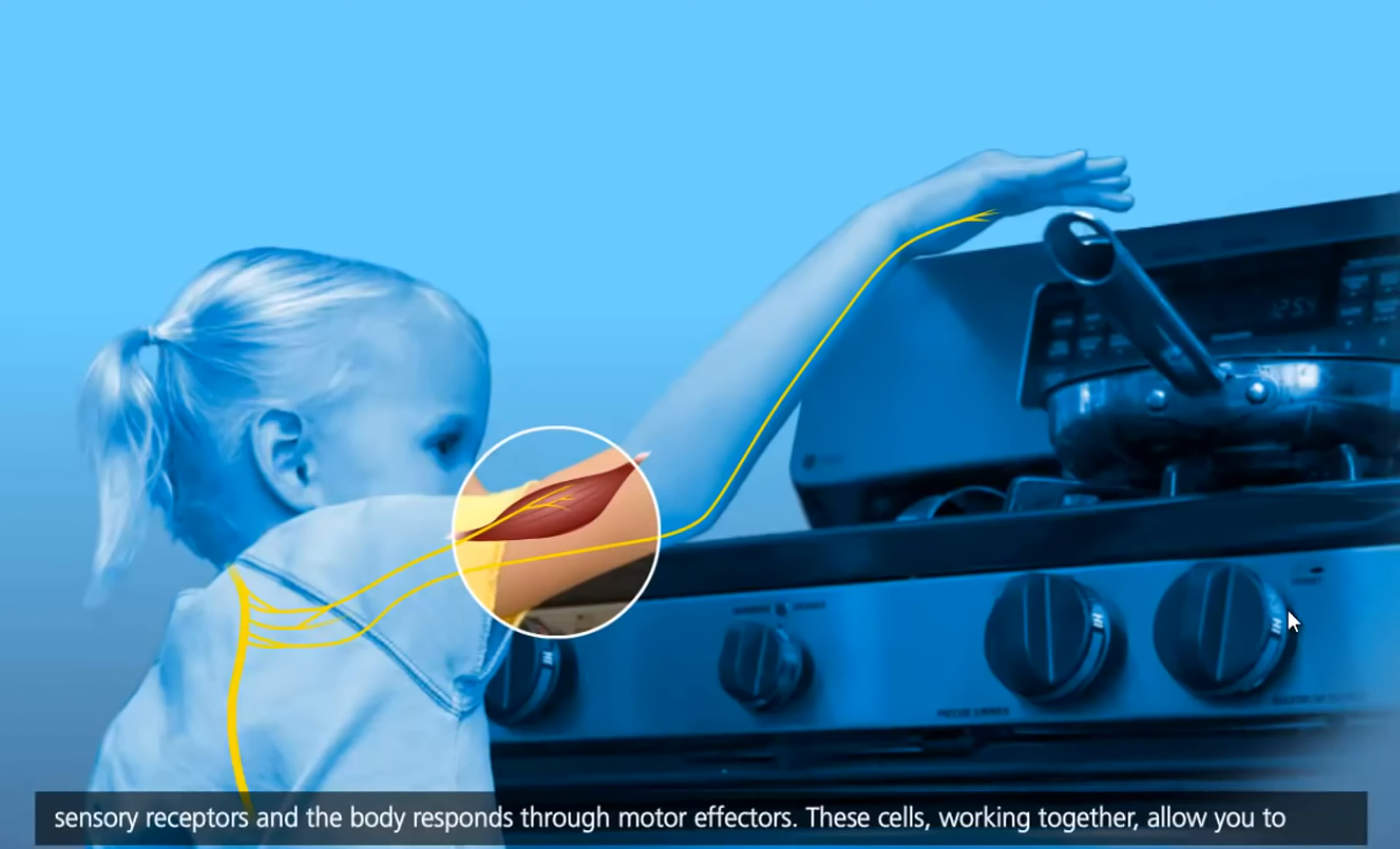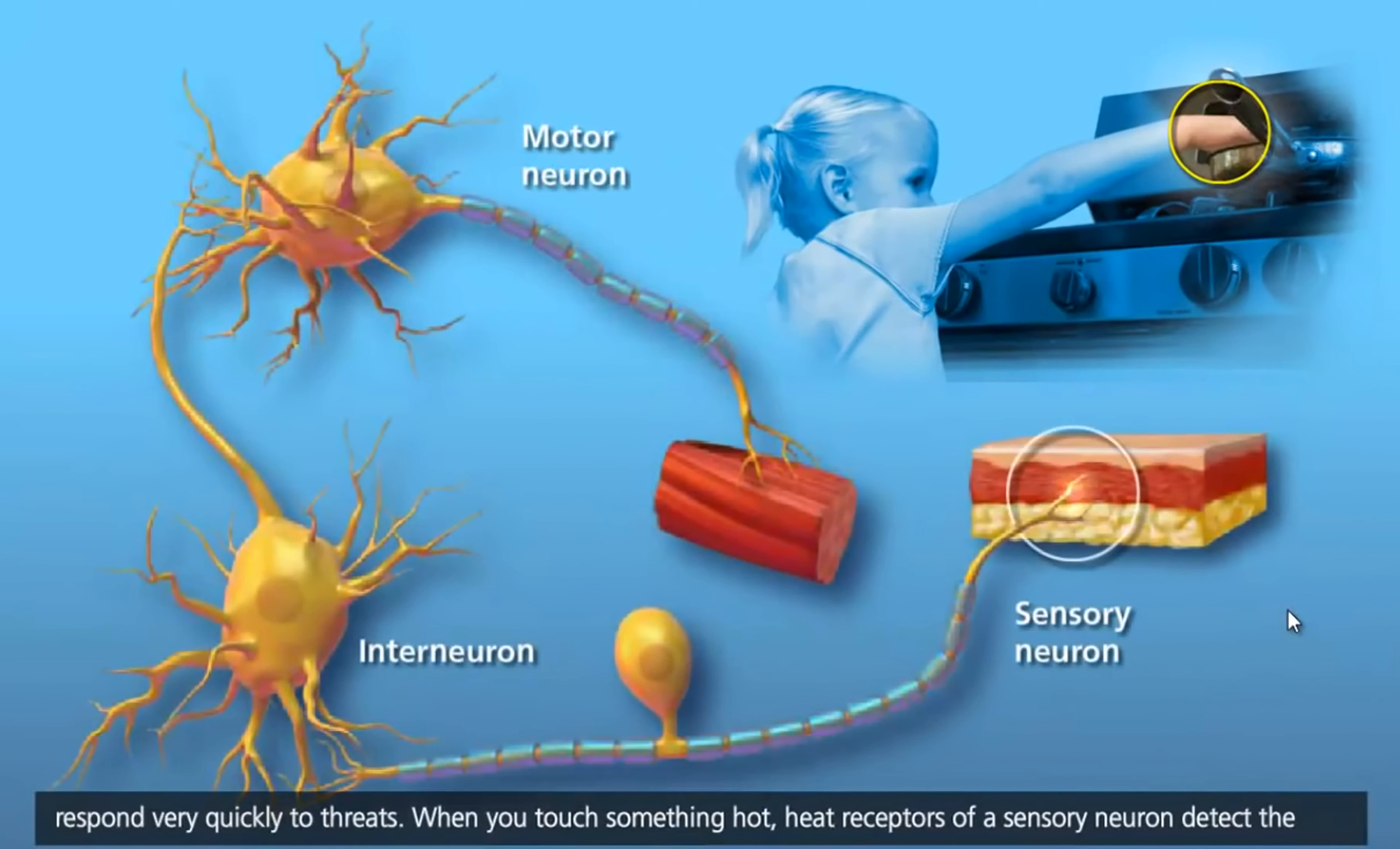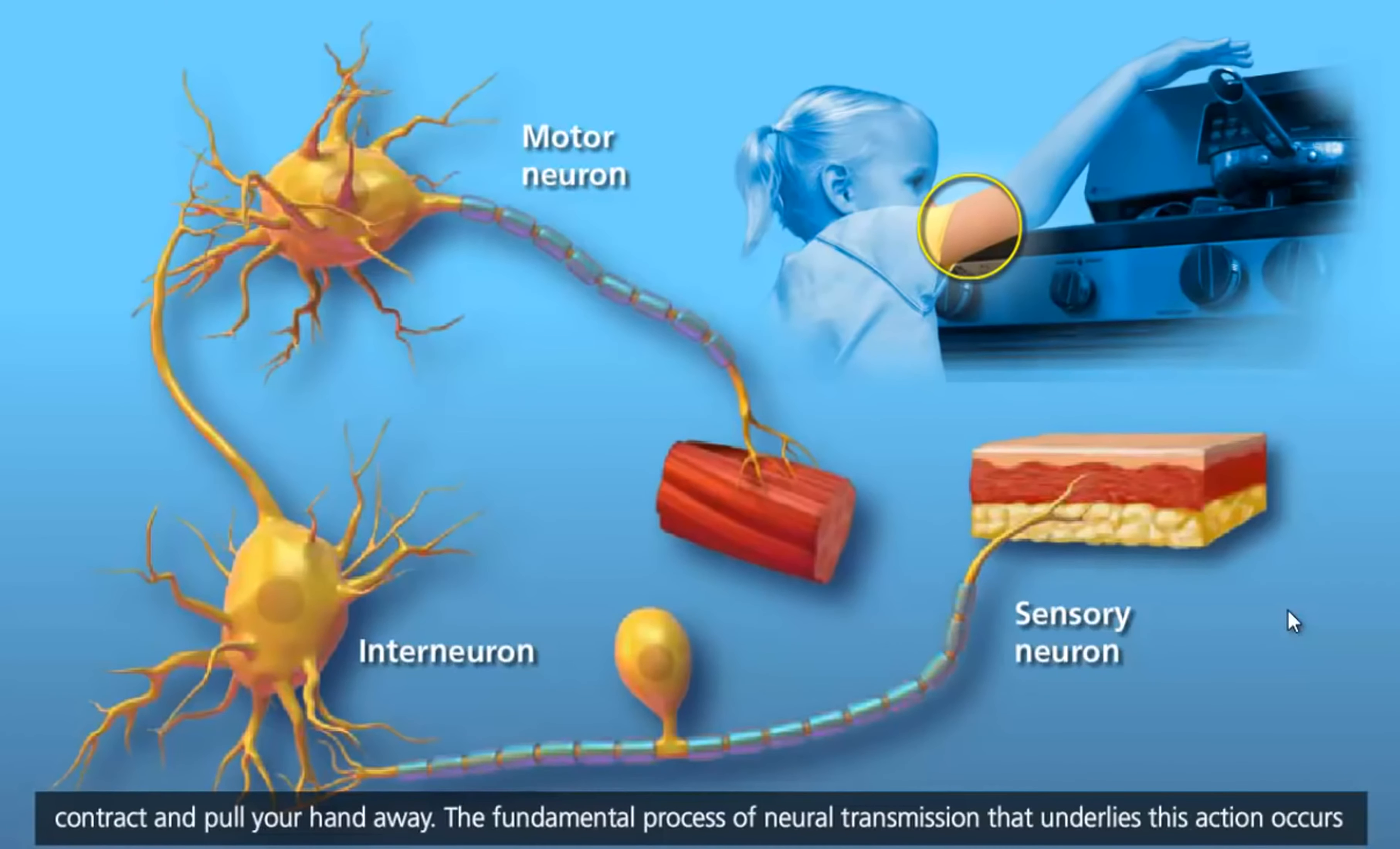These cells working together allow you to respond very quickly to threats. When you touch something hot, heat receptors of a sensory neuron detect the stimuli and send the information of heat to an interneuron in your central nervous system. From there, a motor neuron sends a response from your central nervous system to the skeletal muscles in your arm, causing them to contract and pull your hand away.